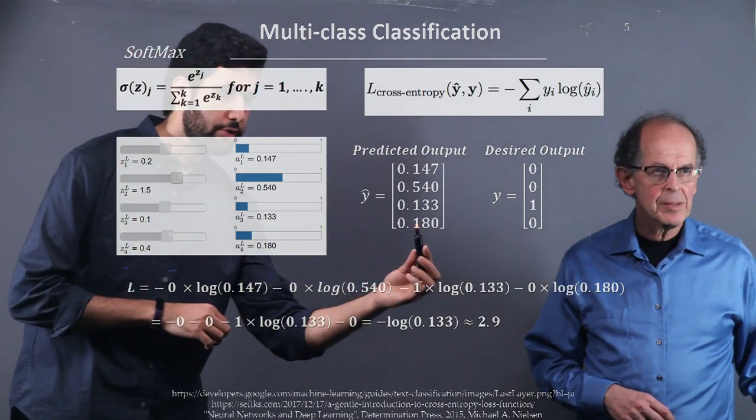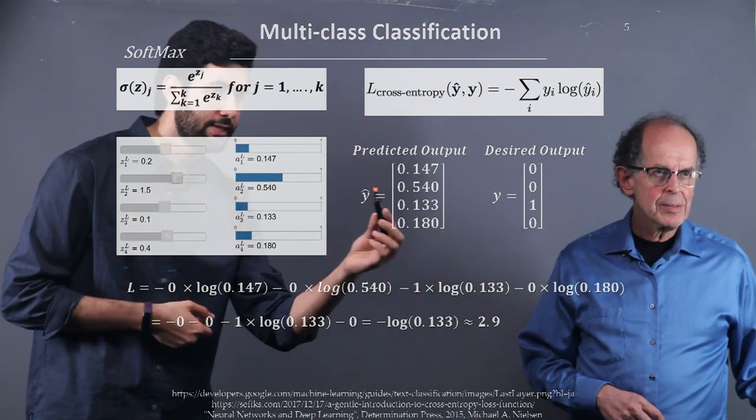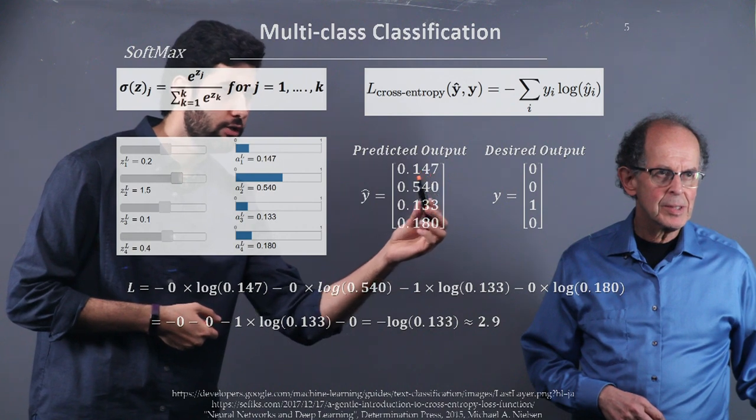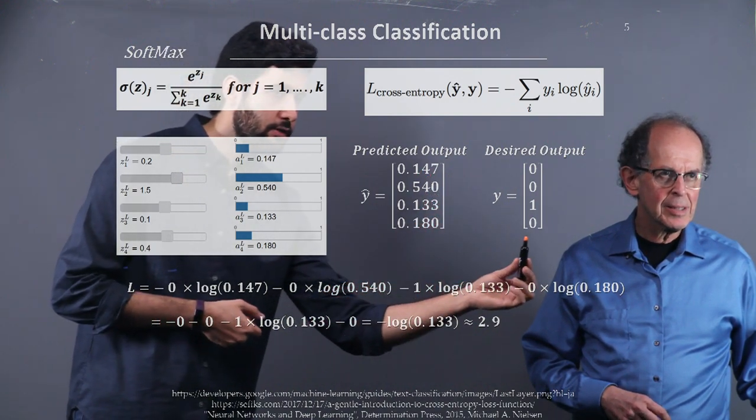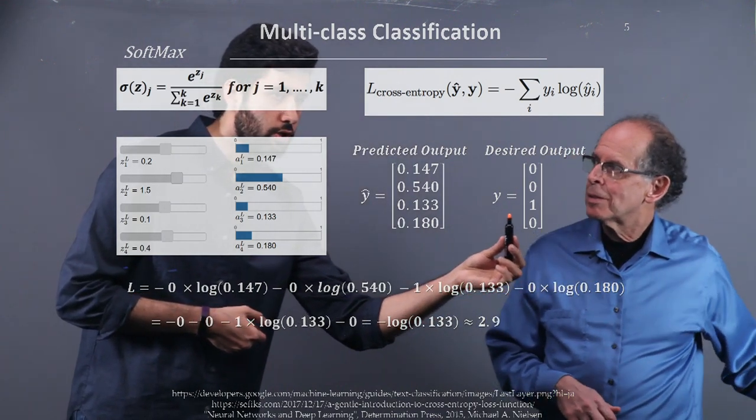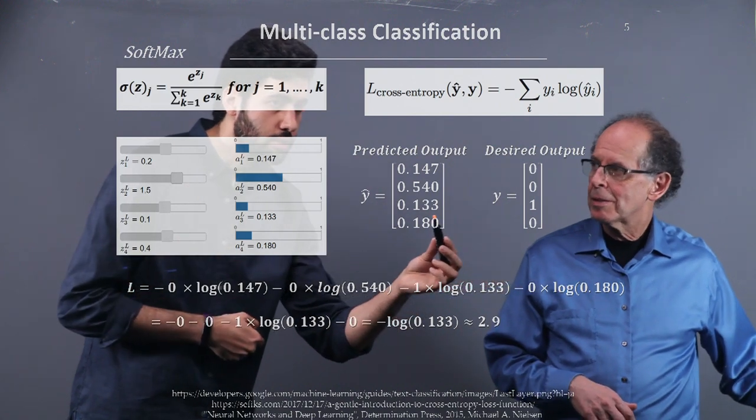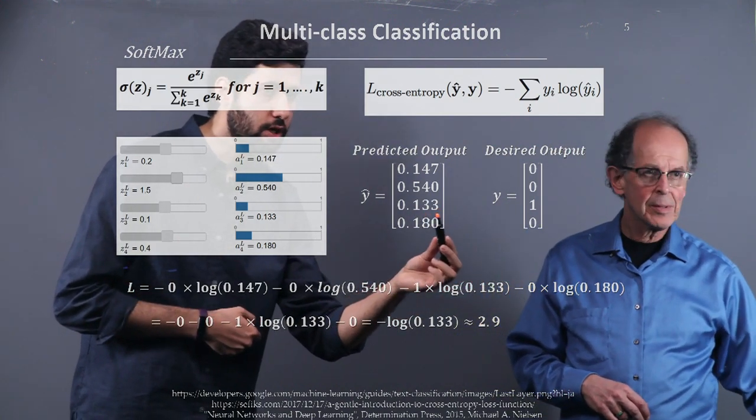So after this, we would get our prediction, which are basically the same column for different classes. This is probability for class 1, class 2, class 3, and class 4. And this one is the ground truth, the desired output. So we want to, for this input, the class 3 is the right classification. So we want this number to go up.